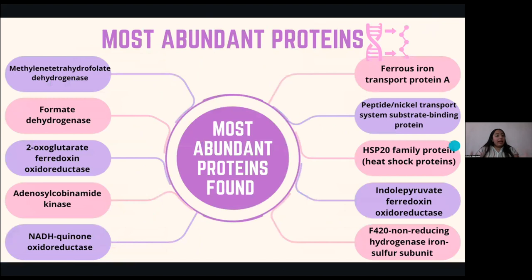I also found some of the most abundant proteins. Most of them are related directly or indirectly with the serpentinization process. There are many dehydrogenases, oxidoreductases, kinases, and some proteins related with the capacity of the bacteria to survive in these extreme places, like the heat shock proteins.